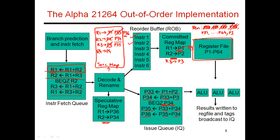Next, instruction two is going to commit. That second instruction is going to make the contents of P34 permanent — this instruction produced a result in P34. So the latest committed value of R2 can be found in P34, not in P2. And so P2 joins the free pool.